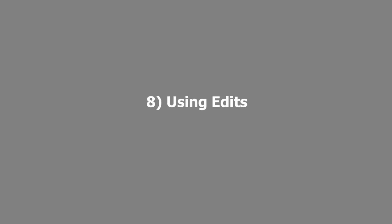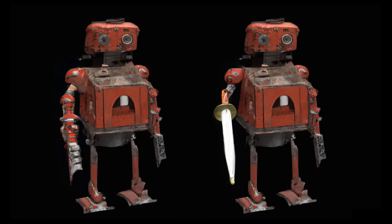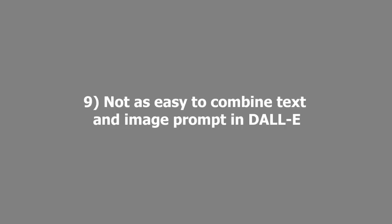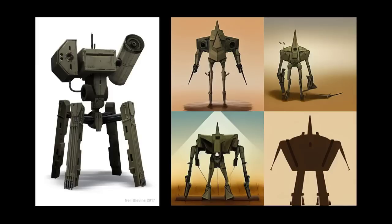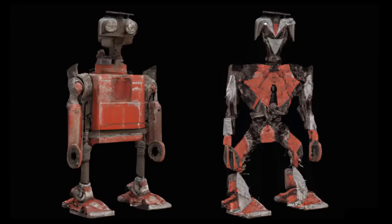DALL-E 2 has an edit feature that MidJourney does not. You can use a simple paintbrush to select an area of the image you want to replace, then replace that part with a text prompt. In one example, I made a robot, painted out its arm, and asked it to replace that part with an arm holding a sword. Additionally, while MidJourney lets you combine an image and a text prompt directly, DALL-E can achieve the same thing through its edit feature: erase the entire subject, add a text prompt, and it takes the basic shape, color, and textures of the original image but replaces the subject with your text prompt.